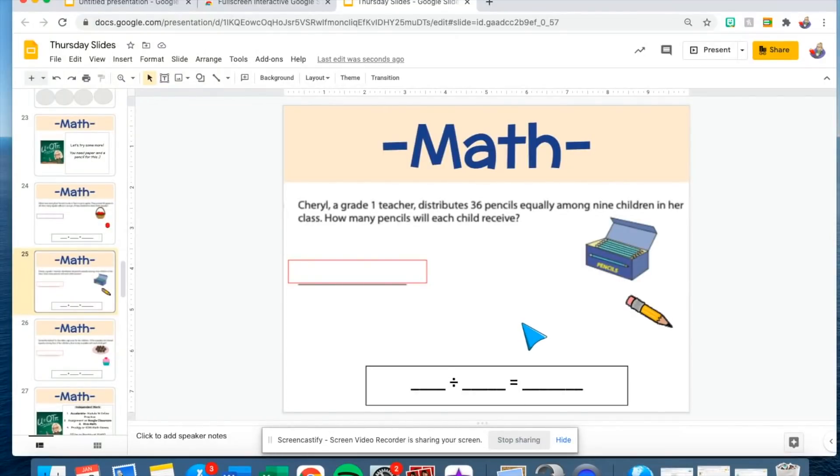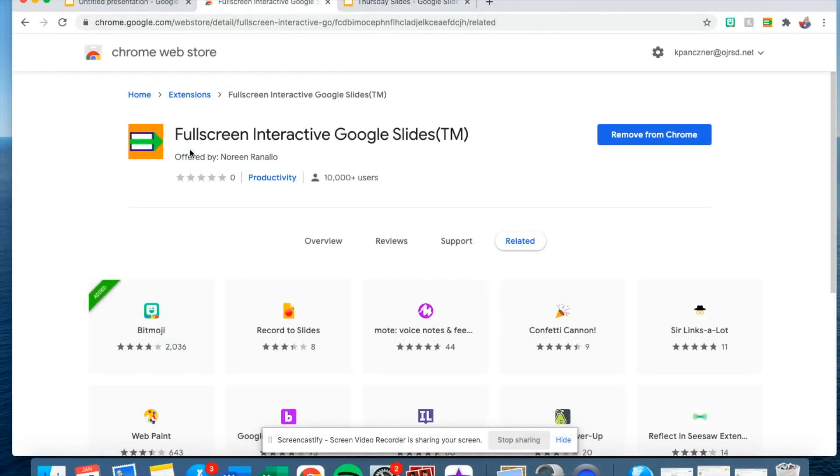Instead of that you're able to keep your screen in present mode with this whole page taking up the whole screen by using a Google Chrome extension. Now just a disclaimer this only works if you're using Google Chrome so if you're not this is not going to work. If you use Google Chrome you are going to find the full screen interactive Google Slides extension. This is the one you're going to look for and install it.